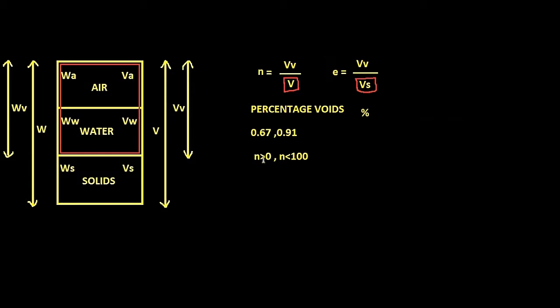The minimum value for N is just rather than 0 but not equal to 0, because if N is equal to 0 then obviously the volume of voids should be equal to 0, which is impossible in case of a real soil.